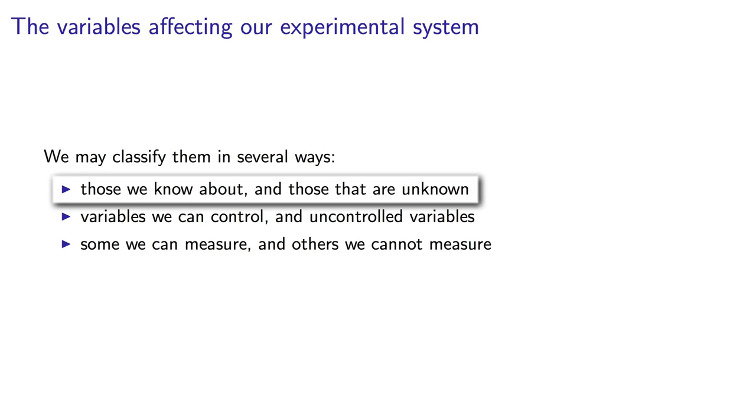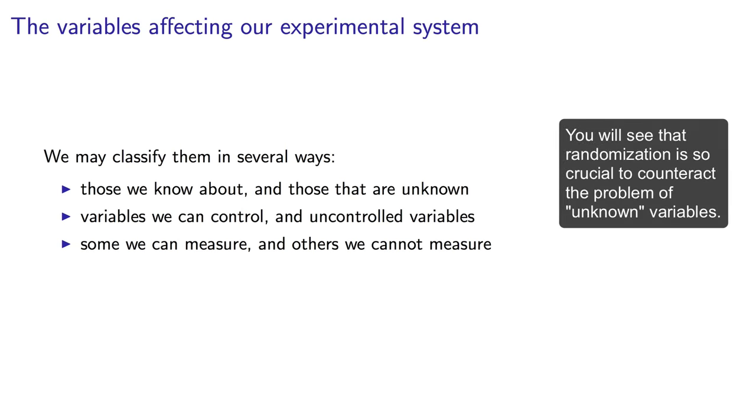We mostly deal with variables we know about. So the first distinction is a little unnecessary, but we will see where we use it later on. There almost certainly are variables in your system that will affect your outcome that you did not think about when you start experimenting. And you'll see why these unknown variables can play an important role later on.